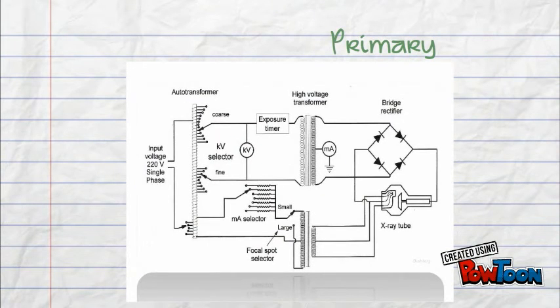Let's see where we're at. The primary side of the circuit is just about to hit the auto transformer. This is where the KVP is selected, but we'll save that topic for another presentation.